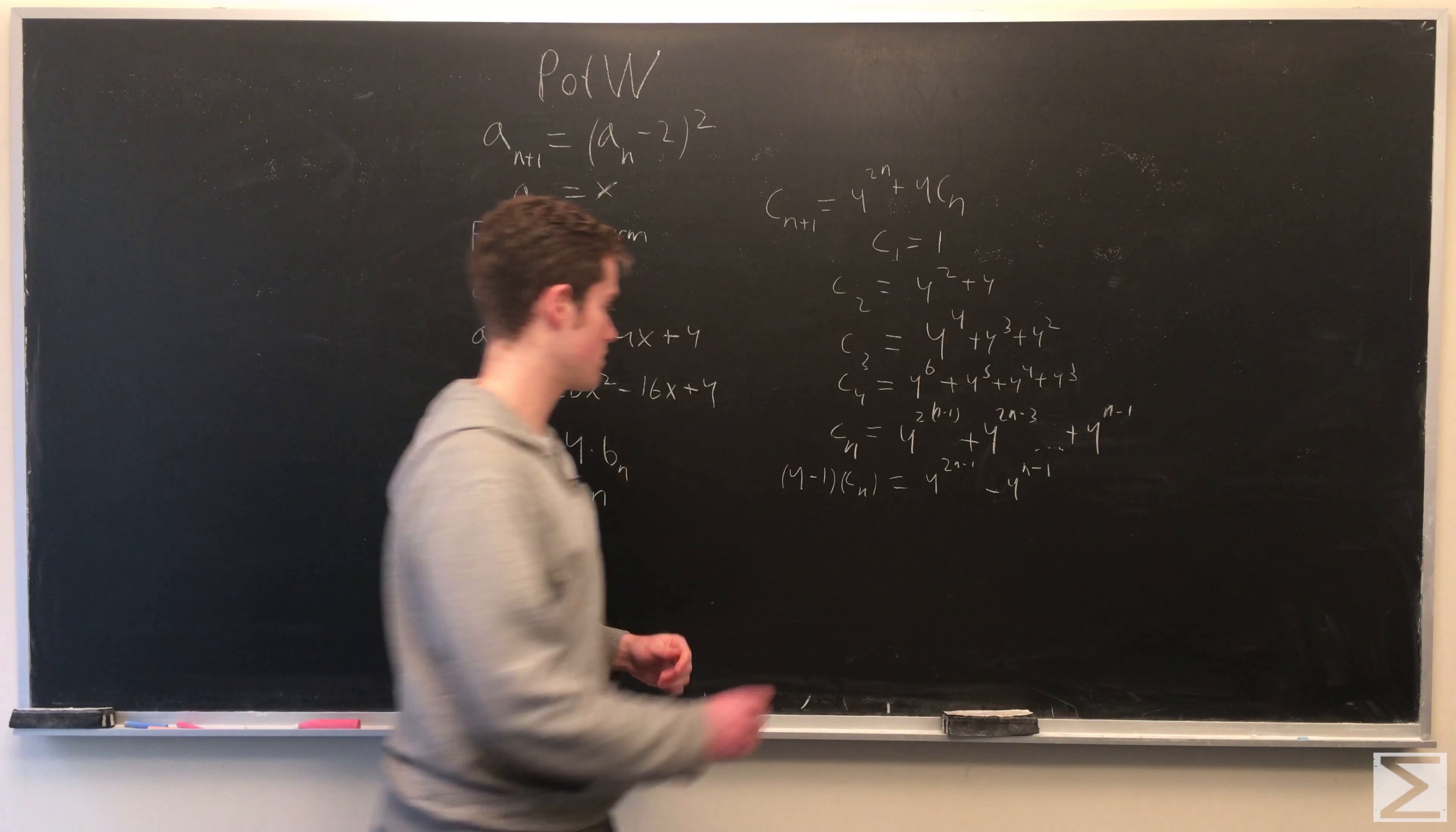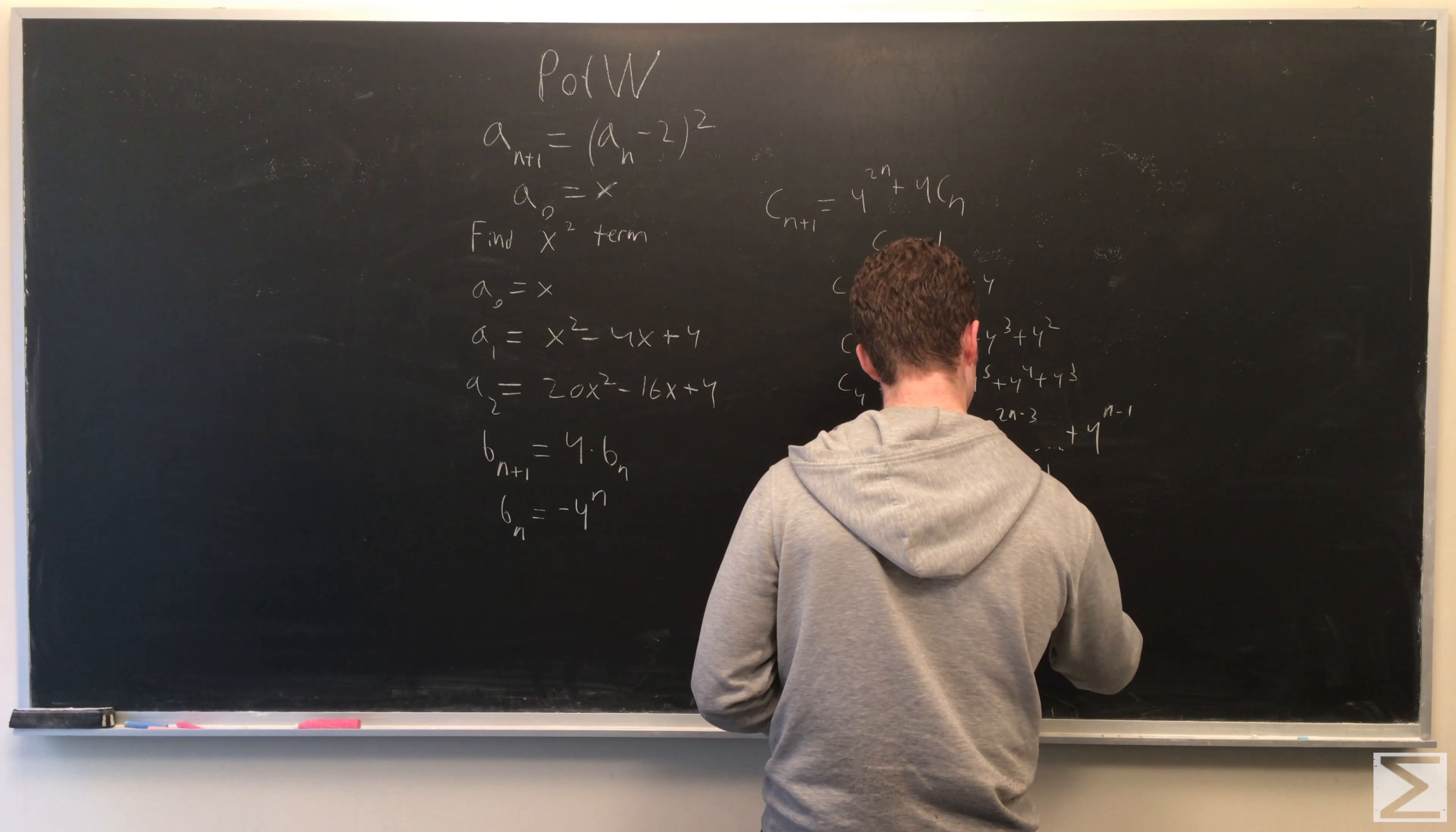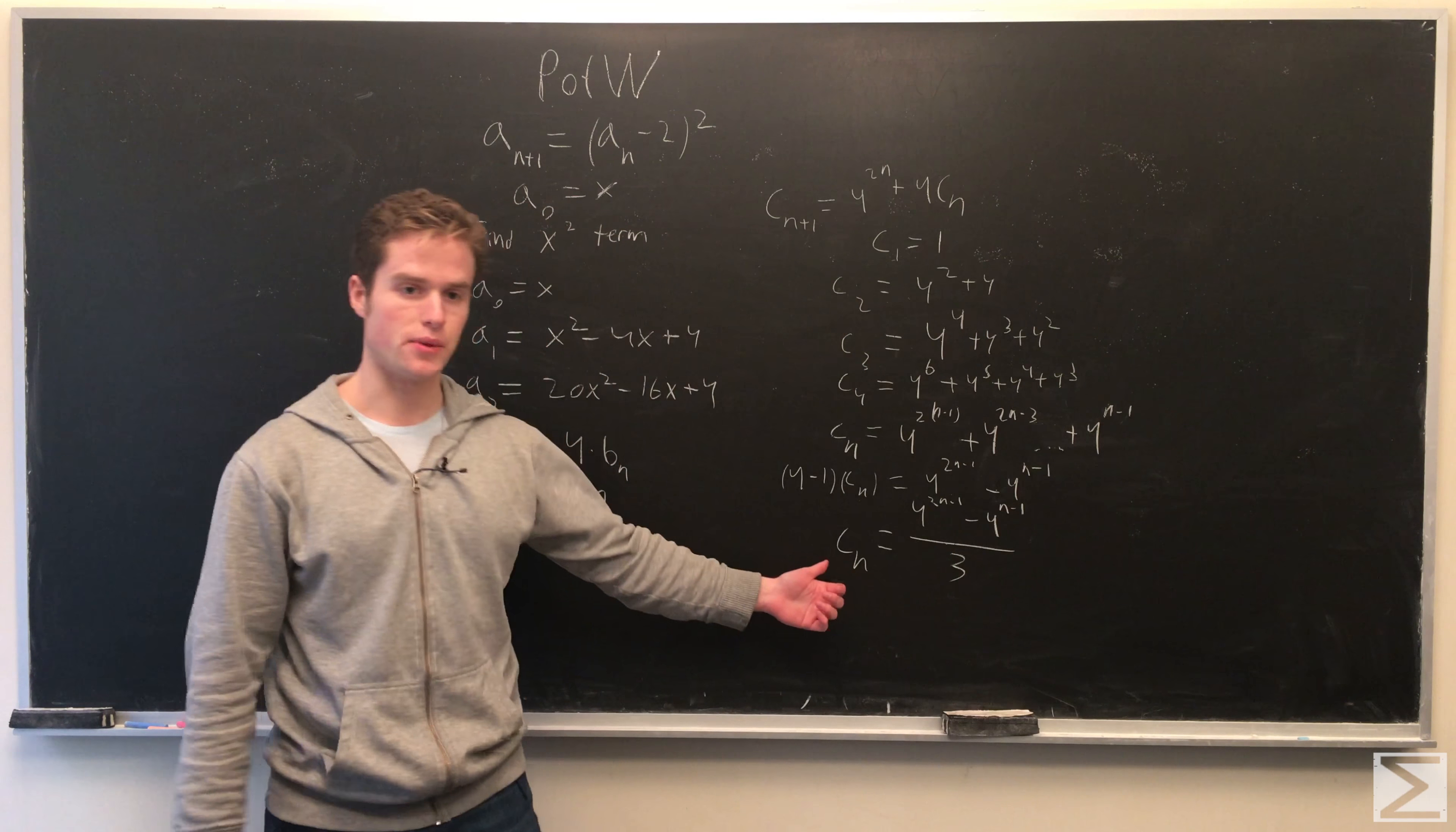And then we divide, and we get cn equals 4 of the 2n minus 1 minus 4 to the n minus 1 over 3. And this is our answer.